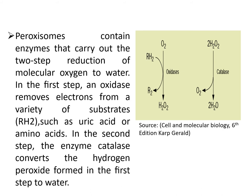Peroxisomes contain at least 30 to 50 different enzymes involved in a variety of biochemical pathways in different cell types. Peroxisomes were originally defined as organelles that carry out oxidation reactions leading to the production of hydrogen peroxide. Because hydrogen peroxide is harmful to the cell, peroxisomes also contain the enzyme catalase, which decomposes hydrogen peroxide either by converting it into water or by using it to oxidize another organic compound.